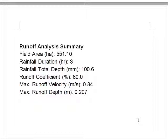After we click OK, OptiSurface Designer calculates our runoff statistics and maps. This is the summary statistics for the analysis. The field area is 550 hectares. The rainfall duration event was 3 hours, with a total of 100.6 millimetres of rainfall during that event. The runoff coefficient was 60%. The maximum runoff velocity was 0.84 of a metre per second in one location, and the maximum runoff depth was 0.2 of a metre.